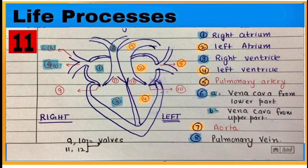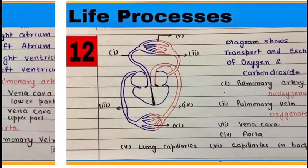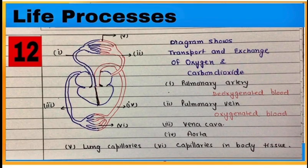This is human heart with four chambers: 1 and 2 are right and left atrium, while 3 and 4 are right and left ventricles. Check other parts also in the diagram. This diagram is showing transport and exchange of oxygen and carbon dioxide gases.